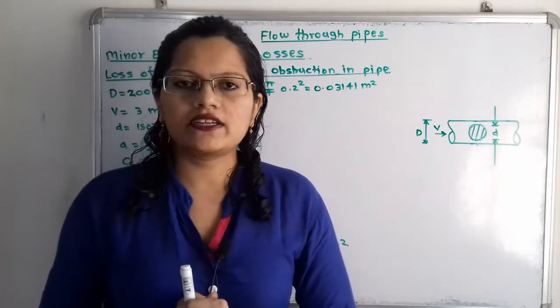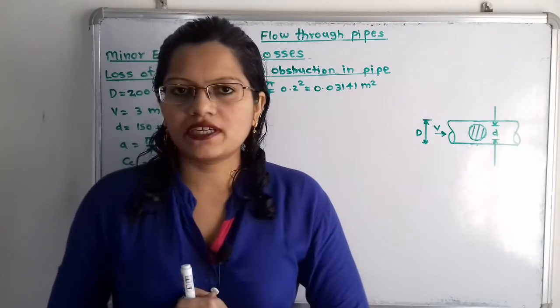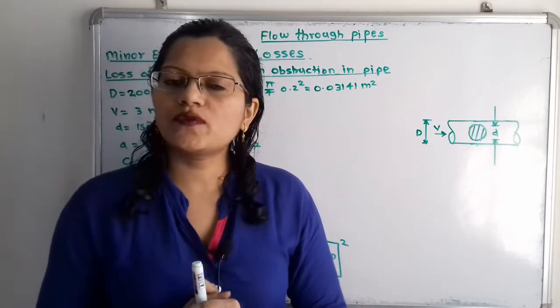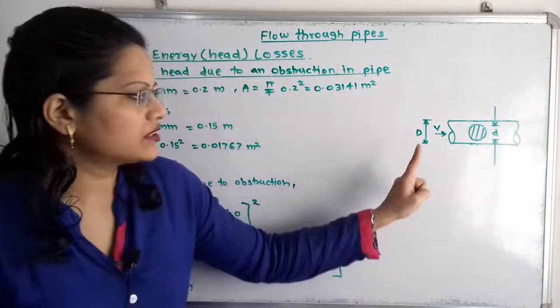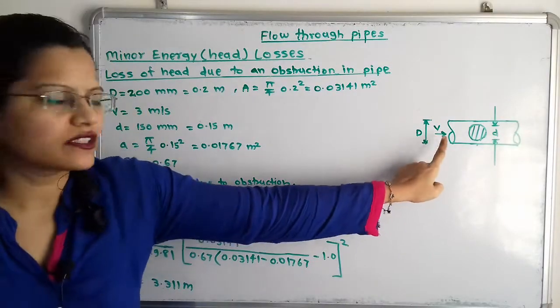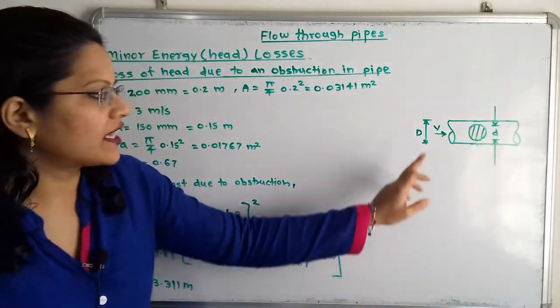Let us first understand the diagram as per the given data. Here water is flowing through the pipe with velocity V. I have shown the direction of flow towards the right-hand side.